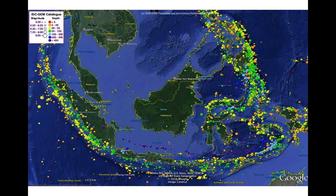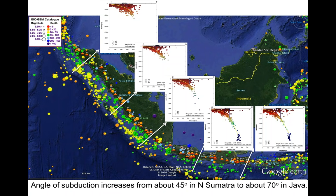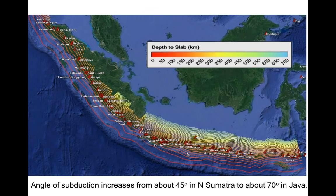This change in angle gives rise in Sumatra to the Sumatran fault. Here is a plot of earthquakes from the catalog. You can see many more earthquakes in Sumatra than in Java, and also that the depths are quite different — many more deeper earthquakes in Java. The subducting slab dip changes from relatively shallow in Sumatra, in accordance with its younger age, up to a subduction angle going from 45 degrees in northern Sumatra to about 70 degrees in Java. This should have significant effects on volcanism and seismicity.